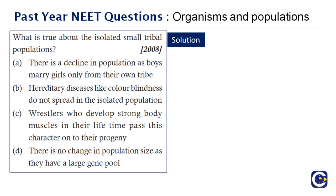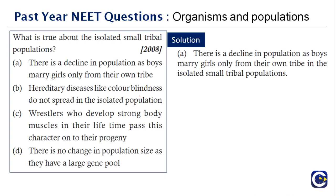In a small tribal population, there is a decline in population because the boys marry girls only from their own tribe. They don't have access to outside people, so the population only decreases as generations grow within. If there is any dying, there's no chance of replacement because they have no contact with the rest. The right answer is option A.